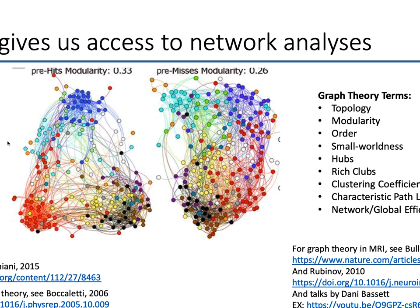Another reason to use functional connectivity is that it gives us access to network analyses, just like structural connectivity might. If you start to think about the brain as nodes and edges — as a network — you're thinking about it in largely the same way people have thought about social networks or the internet. These network analyses are well-established and can be applied quickly to understanding the brain. If you read a paper with terms like graph theory, topology, modularity, small-worldness, hubs, rich clubs, clustering coefficients, path lengths, or network efficiency, you're probably reading about this.